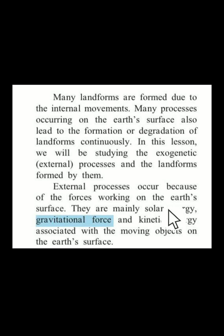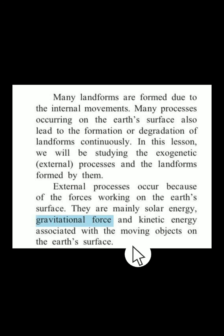So because of these three — solar, gravitational, and kinetic — we can have new landforms formed or landforms degraded. This is the entire lesson in short. The types of exogenetic processes are: weathering, erosion, transportation, and deposition. I will be dealing with each in the coming lectures. The examples I have shown you include valleys, sand dunes, deltas, and U-shaped valleys.